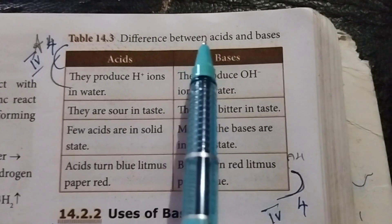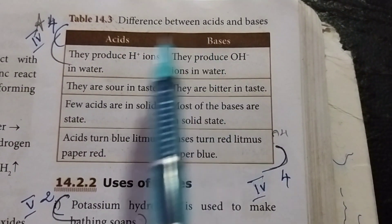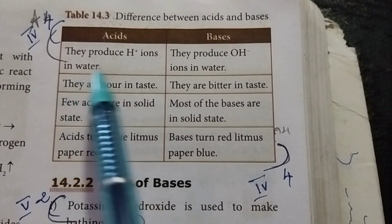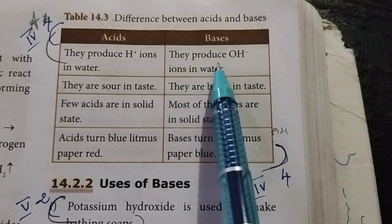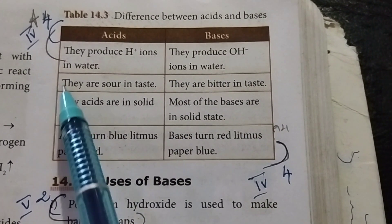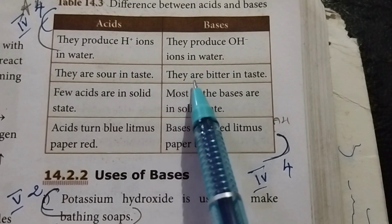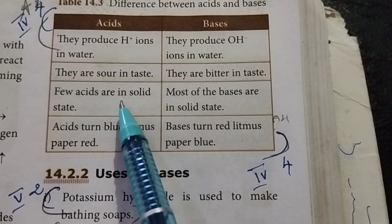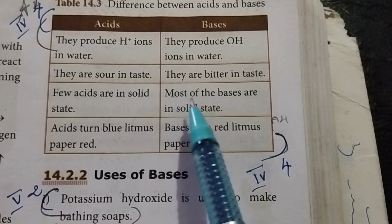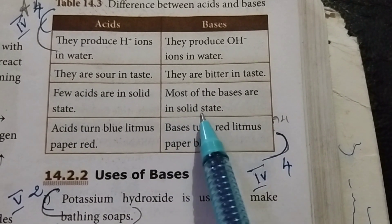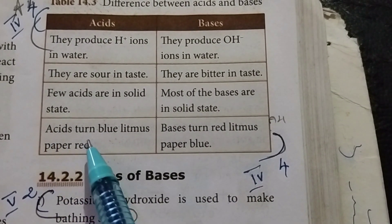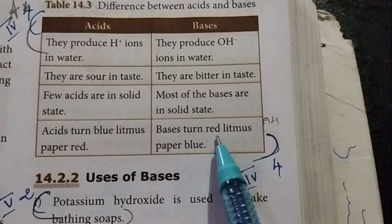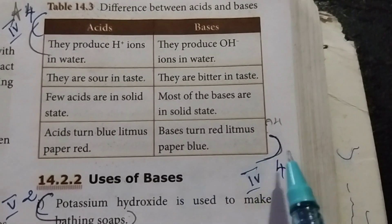Differences between acids and bases: Acids produce H⁺ ions in water; bases produce OH⁻ ions in water. Acids are sour in taste; bases are bitter in taste. Few acids are in solid state; most bases are in solid state. Acids turn blue litmus paper red; bases turn red litmus paper blue.